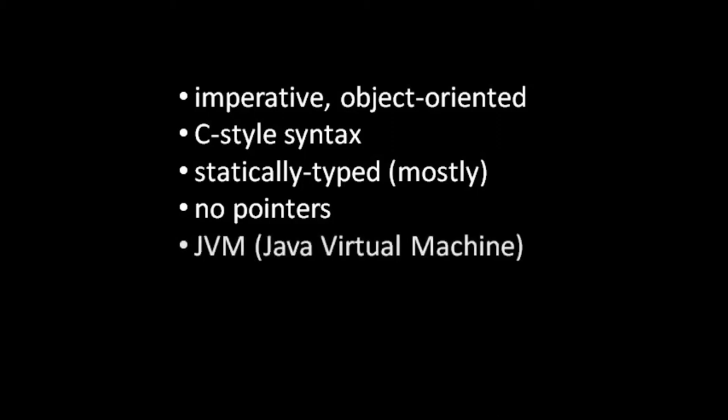Java is actually both compiled and interpreted. First, the source code is compiled into what Java calls bytecode, and then this bytecode is run by the JVM, which is basically a kind of interpreter, though in this case the JVM will also do what's called JIT compiling — just-in-time compilation — which we also discussed.